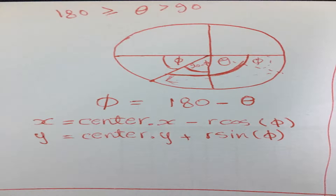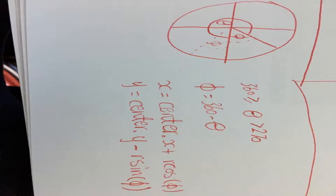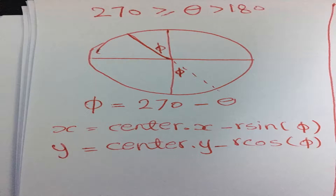If the angle is more than 90 and less than 180, we do the same but on the x-axis we subtract instead of adding, because it's mirrored to the other direction. If the angle is more than 270 and less than 360, we only subtract r sine theta instead of adding — a similar concept. When the angle is more than 180 and less than 270, it's a tricky one. At this time, y equals center.y minus r cosine theta, and x equals center.x minus r sine theta. So we mirrored the angles too.